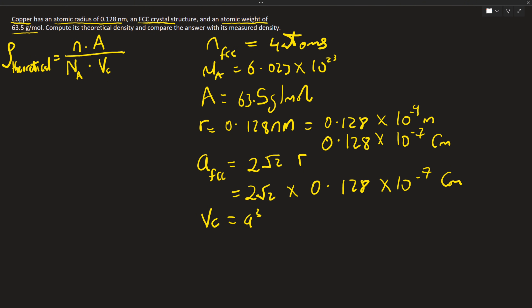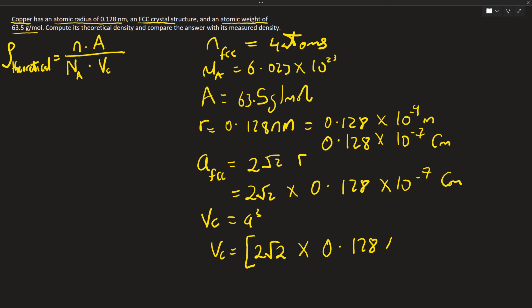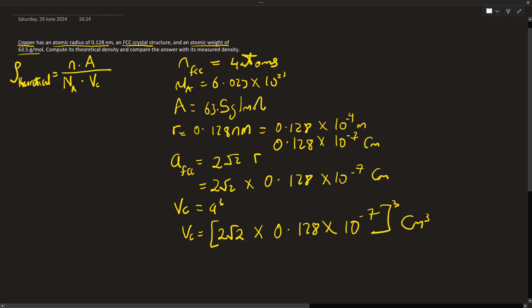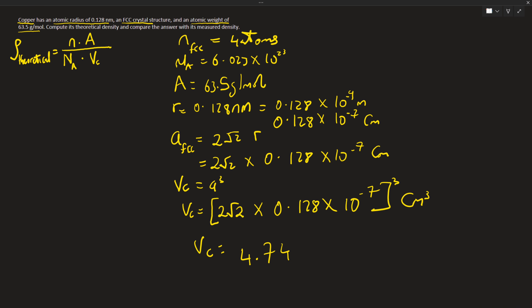The volume of a unit cell equals a cubed. Therefore, the volume of this unit cell equals the quantity (2 root 2 times 0.128 times 10 to the power of minus 7) cubed, in centimeters cubed — because it is a volume, the units become centimeters cubed.